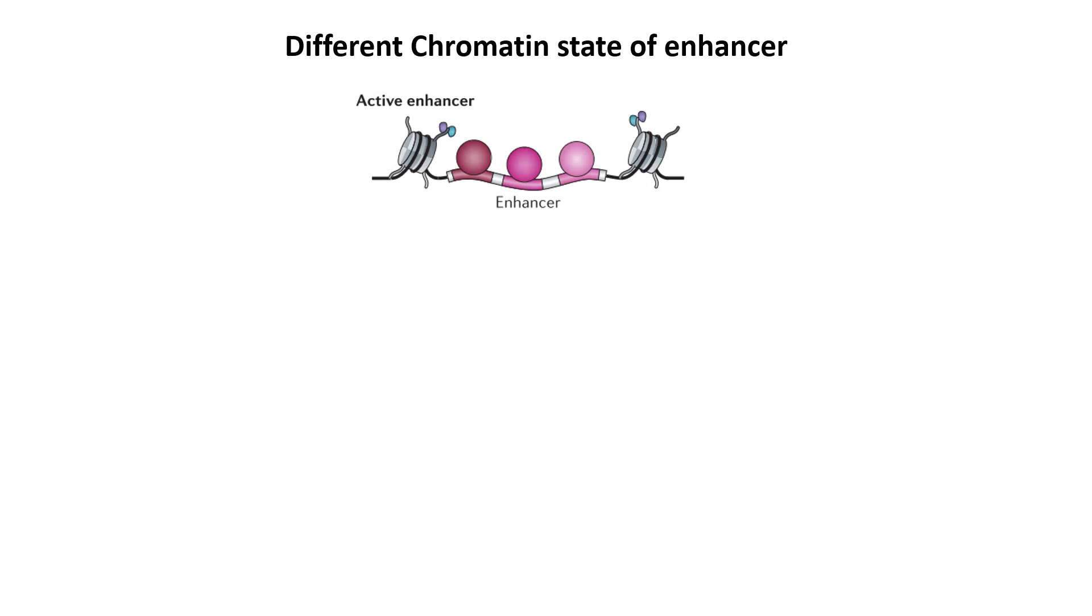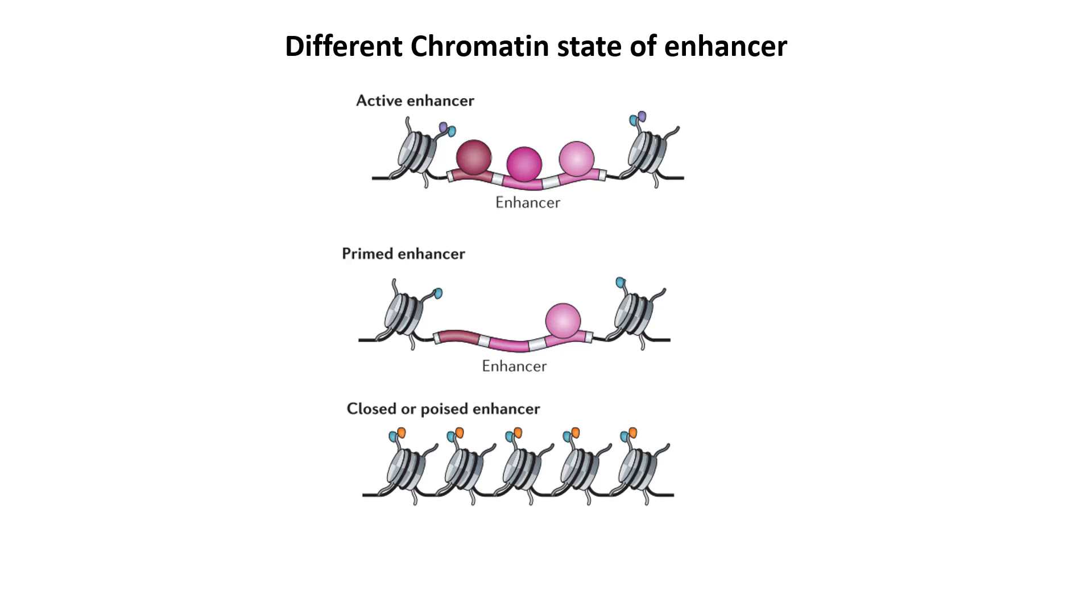I need to show you the different chromatin states of an enhancer. Enhancer is active when the enhancer is accessible to specialized transcription factors, that means the nucleosome is somehow translocated away from that enhancer region. It could also be a primed enhancer where the enhancer is accessible but the specialized transcription factors are just not bound. It could also be poised, which could be opened or closed, so bidirectional markers are there in this state but they are not accessible to the transcription factor right now but could be modified in near future depending upon the need of the cell.